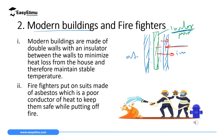And if heat from outside wants to go inside in hot places, it will meet this insulator and be maintained outside. So we are using double walls with an insulator to prevent heat loss from inside the house to outside in cold places, and to prevent heat entering into the house in hot places.